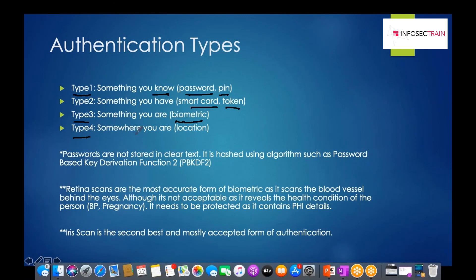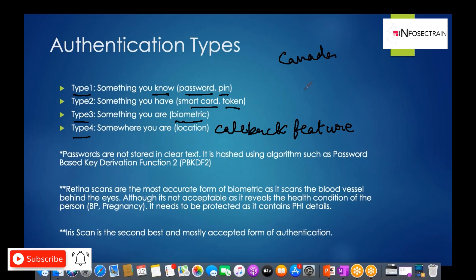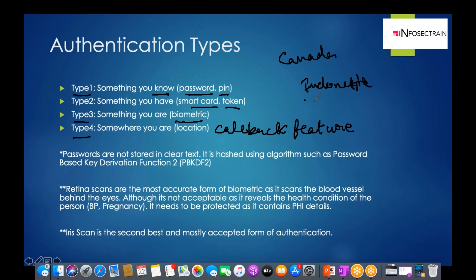Type 4 — not commonly discussed but still important — is somewhere you are. This is location-based authentication, tracking IP addresses or using features like callback. For example, if your account has been accessed from Canada but suddenly the IP address reflects from Indonesia, a system with Type 4 authentication will not allow that access.